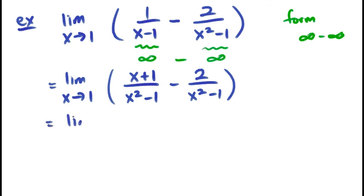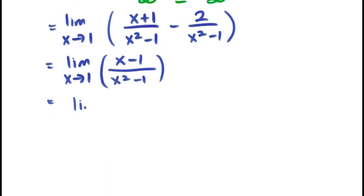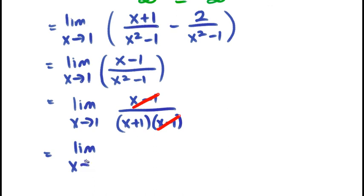The common denominator approach gives you x plus 1 minus 2 on the numerator, which is x minus 1. And x squared minus 1 on the denominator. The denominator can now be factored and canceled. And now we can use substitution. One goes in. I get a limit of 1 half.